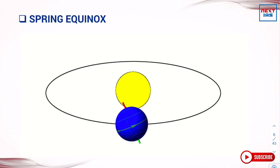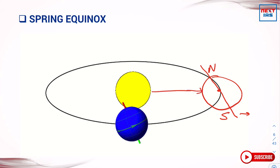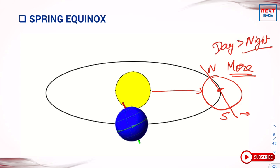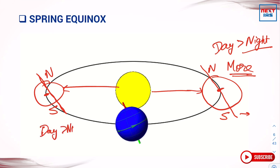The Earth is rotating around the sun, and its axis is tilted. When the Earth is at one location, the Northern Hemisphere is tilted towards the sun and the Southern Hemisphere is tilted away. This means the Northern Hemisphere receives more light, so the length of day is greater than night. At the opposite position, the Southern Hemisphere tilts toward the sun, and its length of day is greater than night.